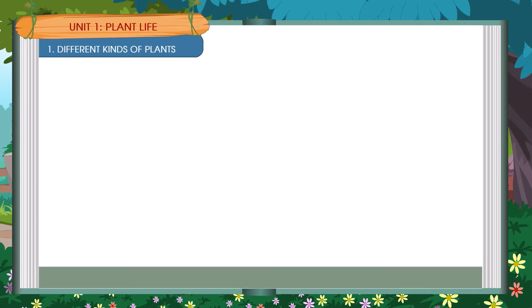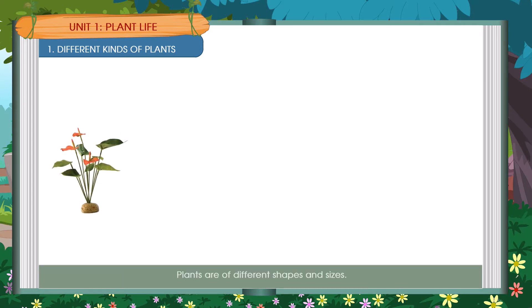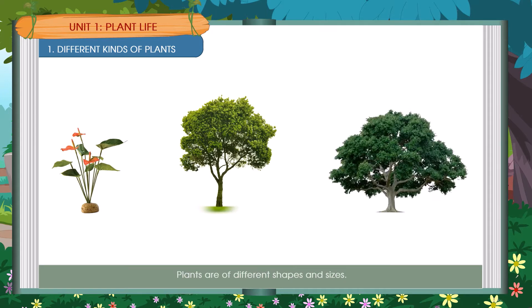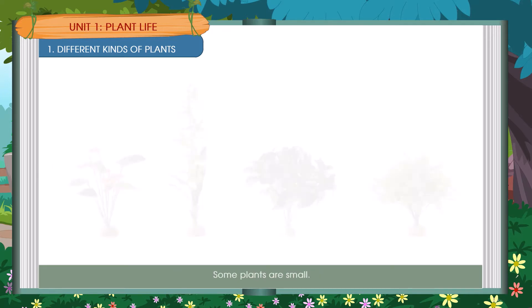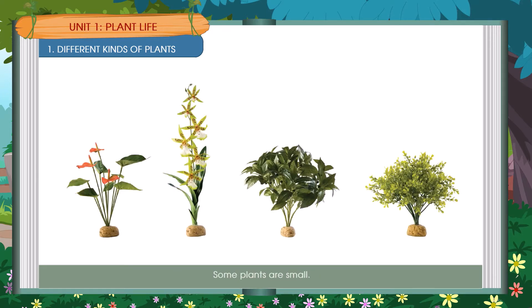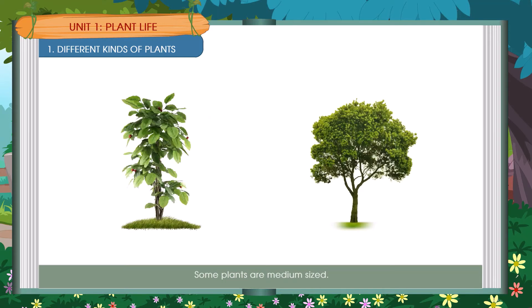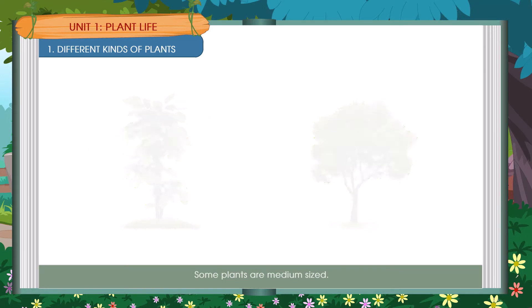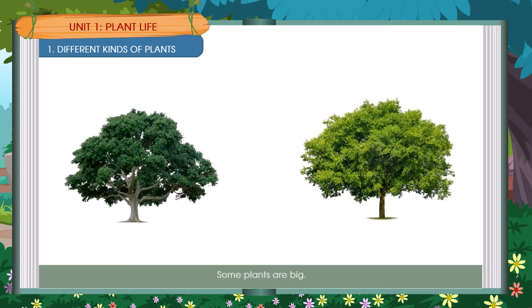Plant Life. Different Kinds of Plants. Plants are of different shapes and sizes. Some plants are small. Some plants are medium sized. Some plants are big.